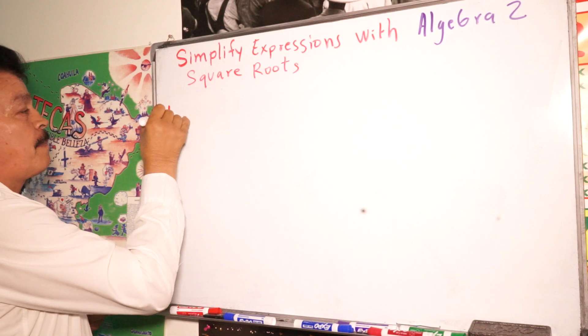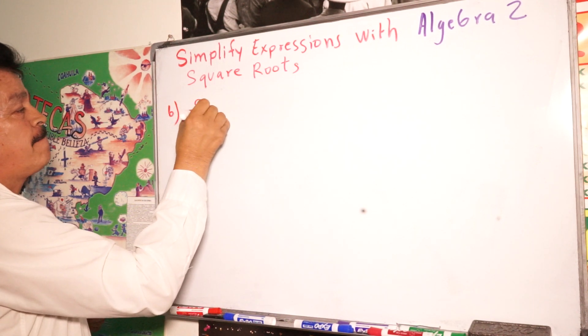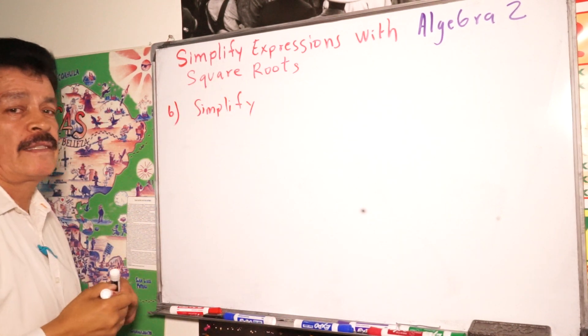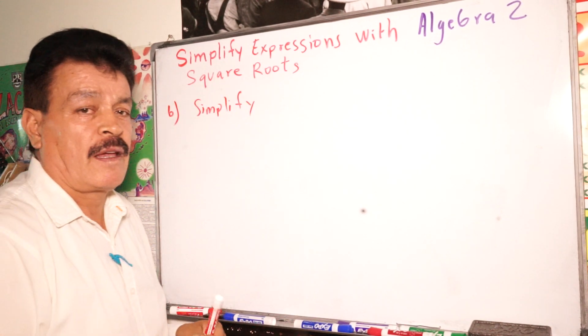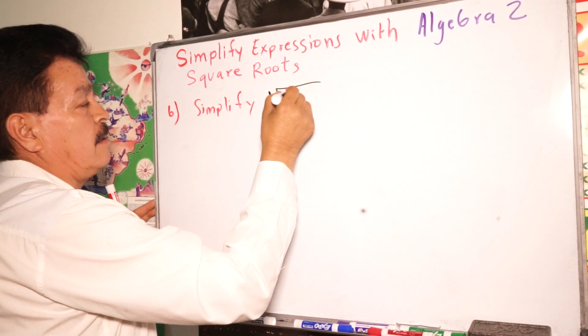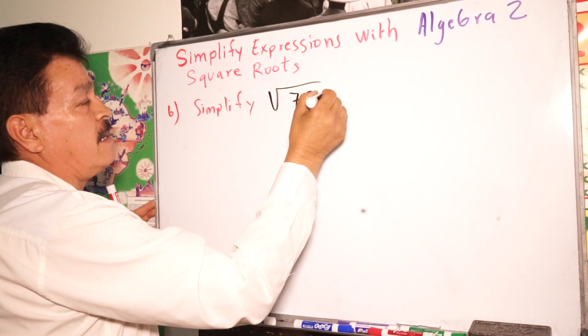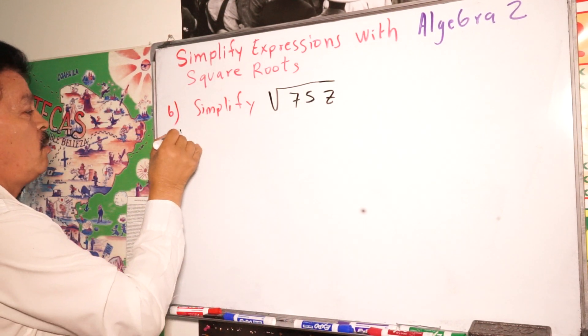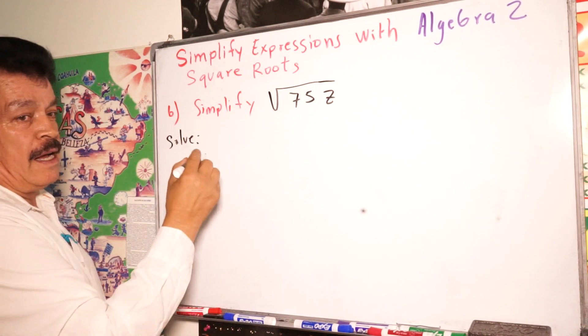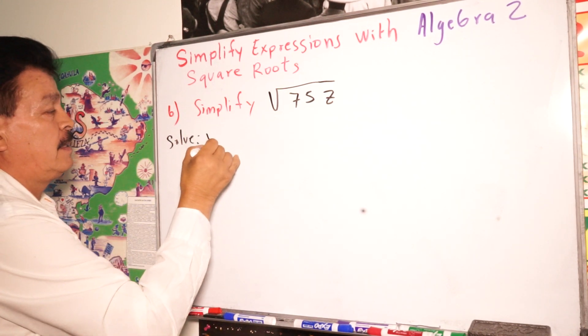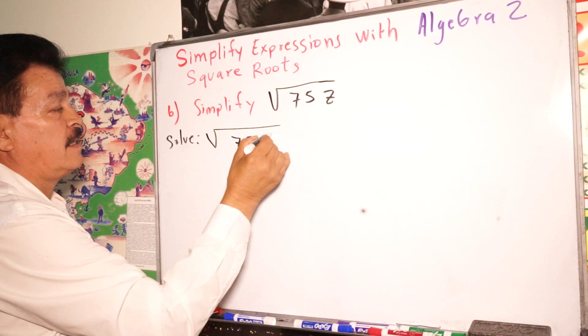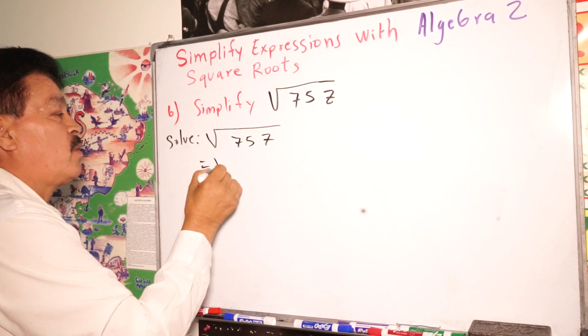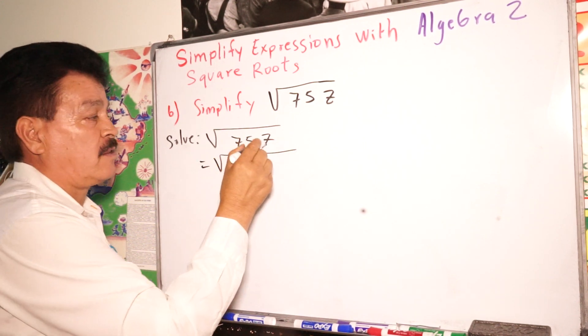Let's simplify the square root of 75Z. So, this is equals, we have to find the factors here.